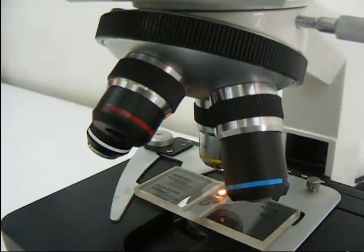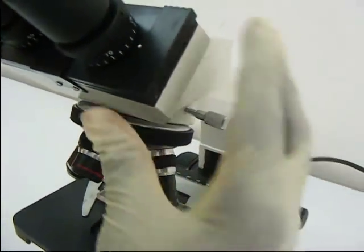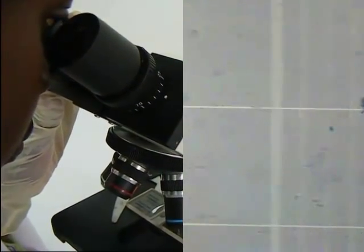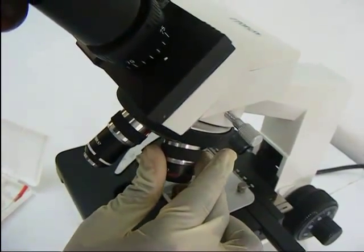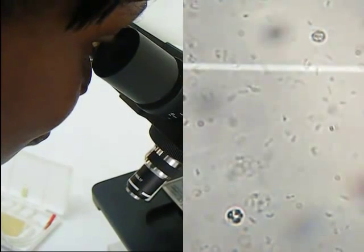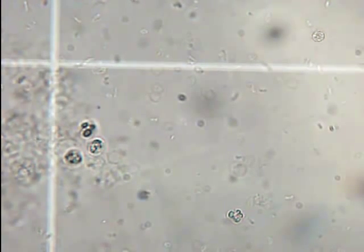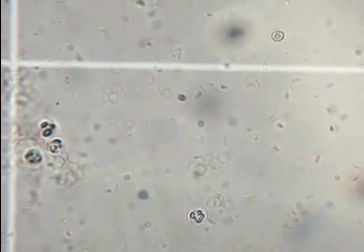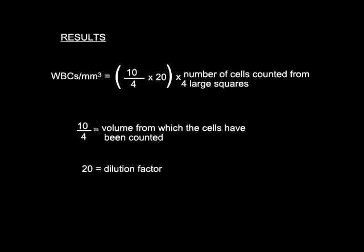Under objective magnification of 10, the white cell counting area is seen prominently with tiny white blood cells. At objective magnification of 40, the white blood cells are very visible and suitable for counting. The white blood cell count per millimeter cube of blood is then estimated.